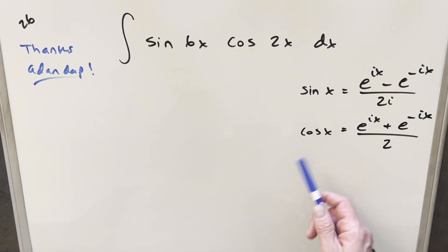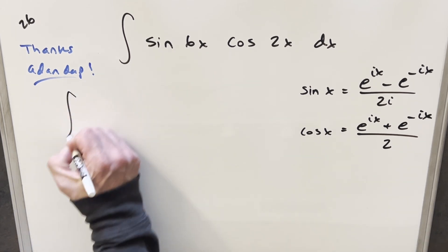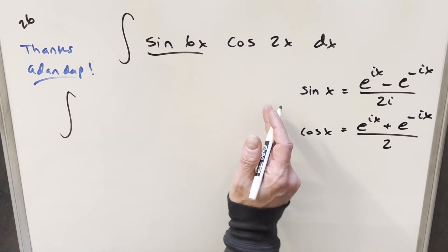So we have these two definitions over here to the right. Both these are derived from Euler's formula, and basically what we'll do is we'll just use this to rearrange our integral and put it in this complex form. So what I can do is just get started with the integral and we'll just kind of transform everything.